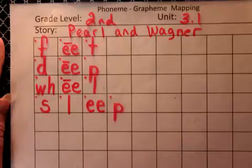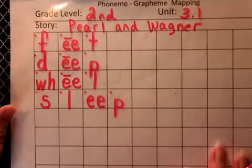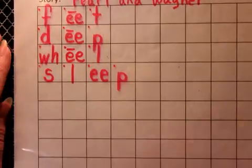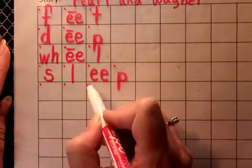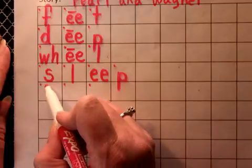The next word we'll do is teeth. I brush my teeth. T, E-E, TH. The first sound is T. It's the T. Start at the top, go down, and then cross.